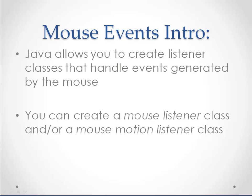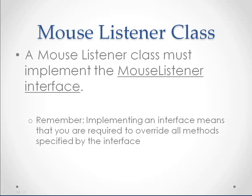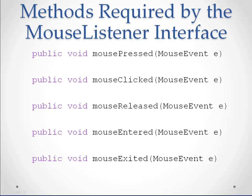Java allows you to create listener classes that handle events generated by the mouse. You can create a Mouse Listener class and/or a Mouse Motion Listener class. The Mouse Listener class must implement the Mouse Listener interface. Remember, implementing an interface means that you are required to override all methods specified by the interface. These are the methods required by the Mouse Listener interface — they are all public void methods that accept one parameter, a mouse event that we're going to call E.